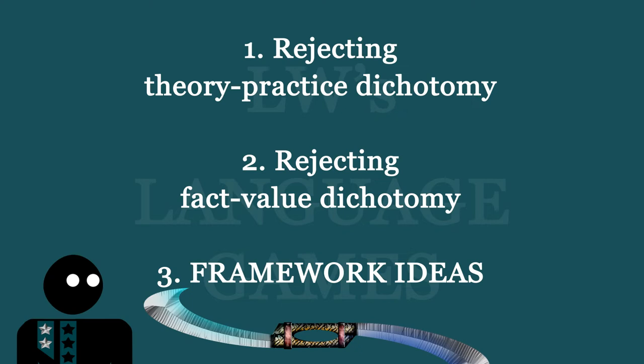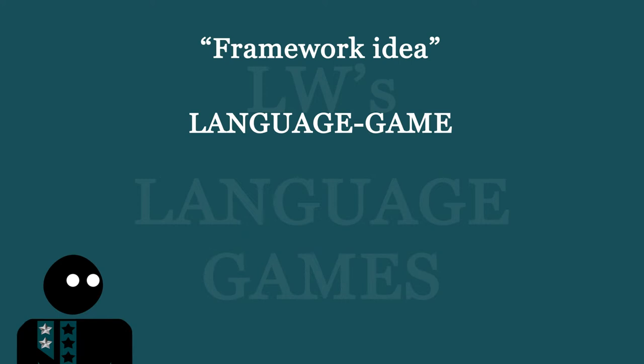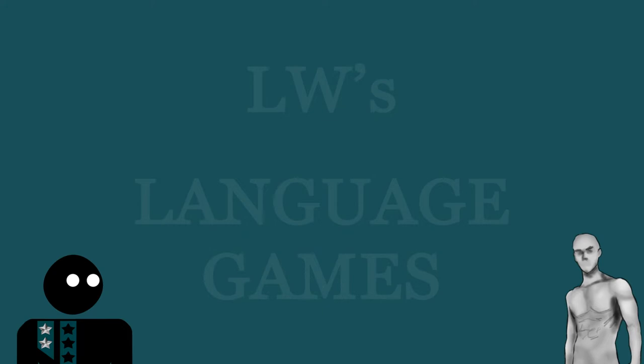I was so dissatisfied with O'Grady's presentation of Wittgenstein's framework idea of language games that I felt I had to make this video. Wittgenstein tends to be seen as a spooky, deep, complicated, and mystical character, when none of that's really true. But there is an actual reason why Wittgenstein can be hard to explain for philosophers trying to stay true to his philosophy.